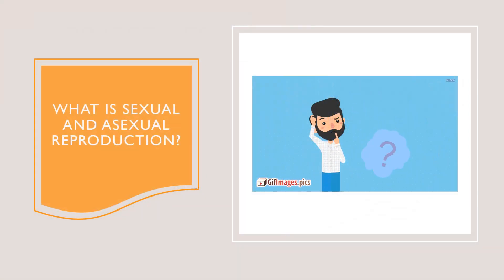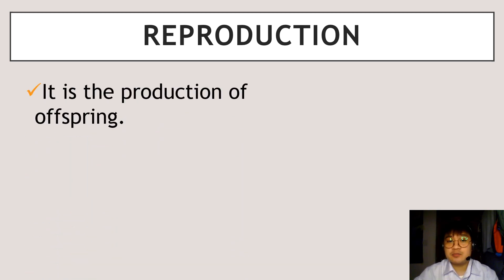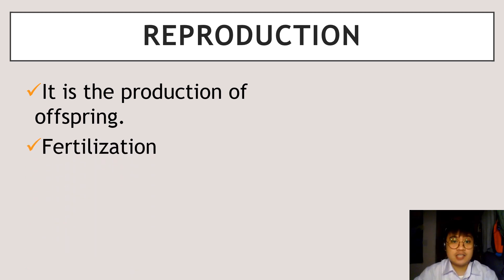For the first part of our discussion, we will try to answer this question: What is sexual and asexual reproduction? Reproduction is one of the basic characteristics of living things. It is important because it is the natural process wherein an organism transfers its genes to the next generation. It is the production of offspring, where two organisms give sex cells which encapsulate the whole genetic information of an individual. Reproduction also involves the process of fertilization.